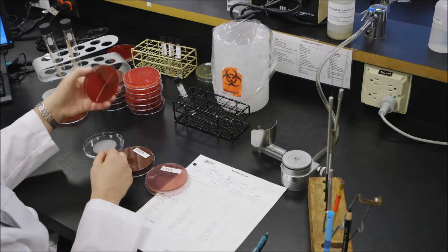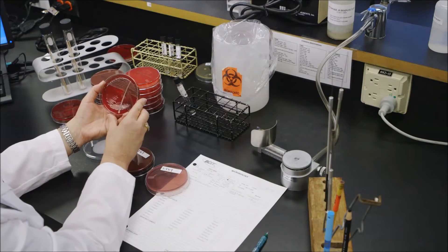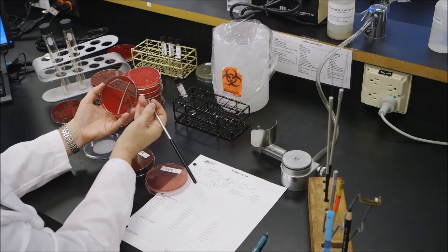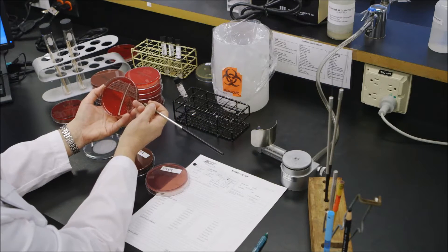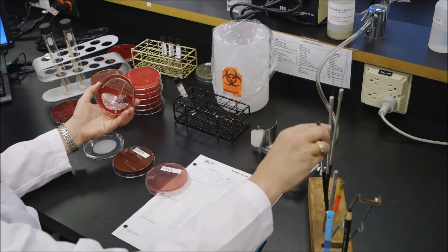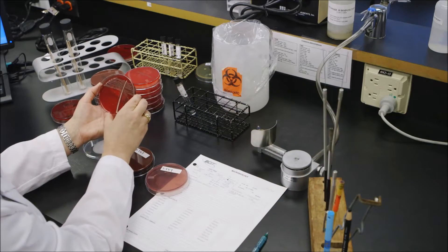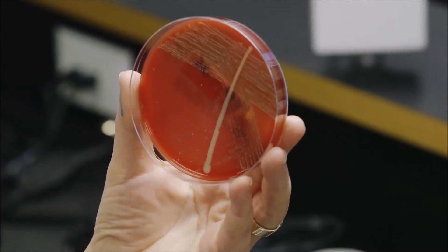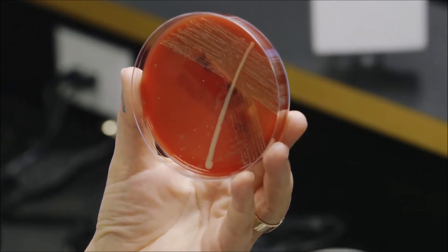When I look on the blood agar plate I don't see anything that looks like that medium-sized colony, tan gray. The only things I see mostly on that plate are alpha hemolytic organisms and some non-hemolytic organisms.